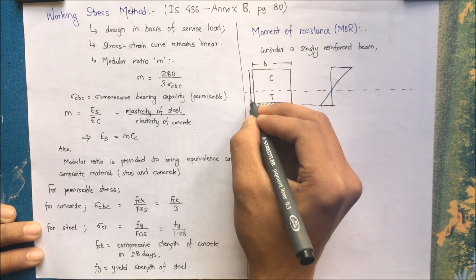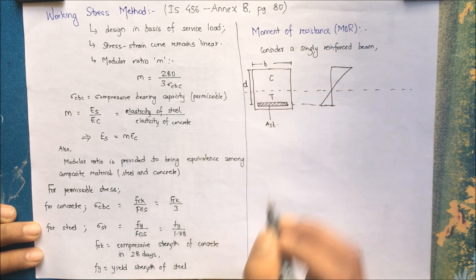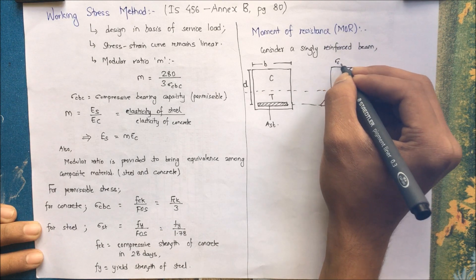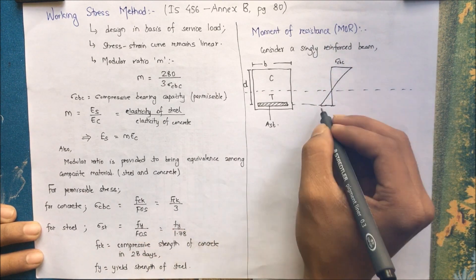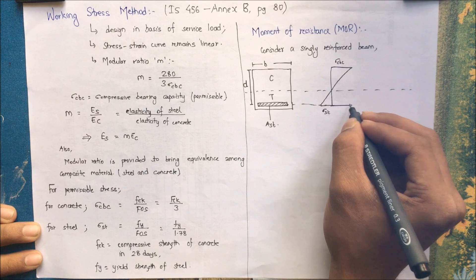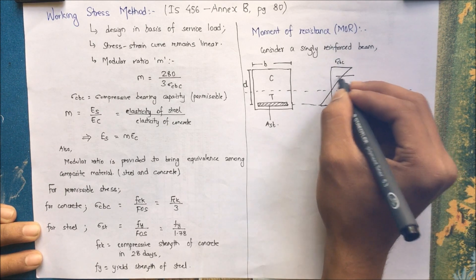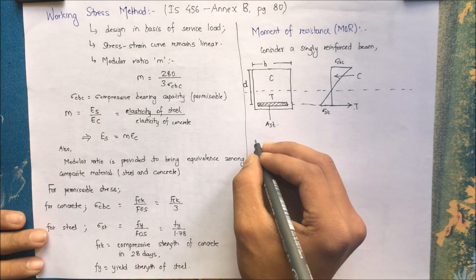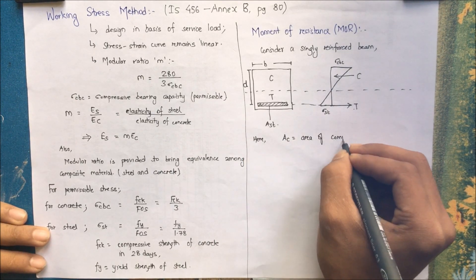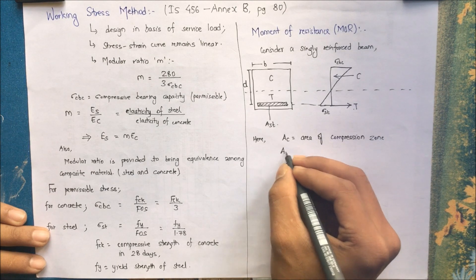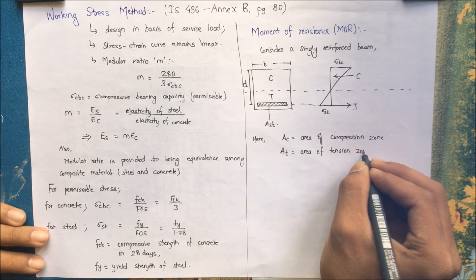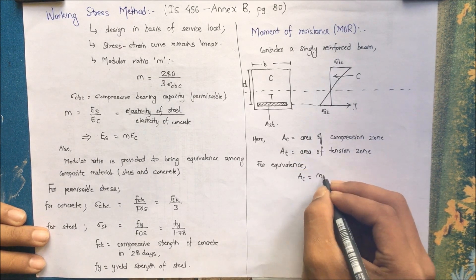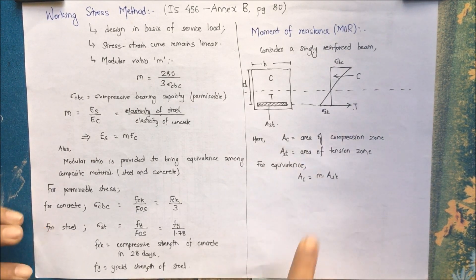Let me draw the stress curve for this section. This is the compression zone and this is the tension zone; B is the width of the section and D is the effective depth. For concrete, Sigma CBC is the compressive stress, and the tensile stress is denoted T and C in opposite directions. The whole tension is taken by the steel. AC is the area of the compression zone and AT is the area of the tension zone.